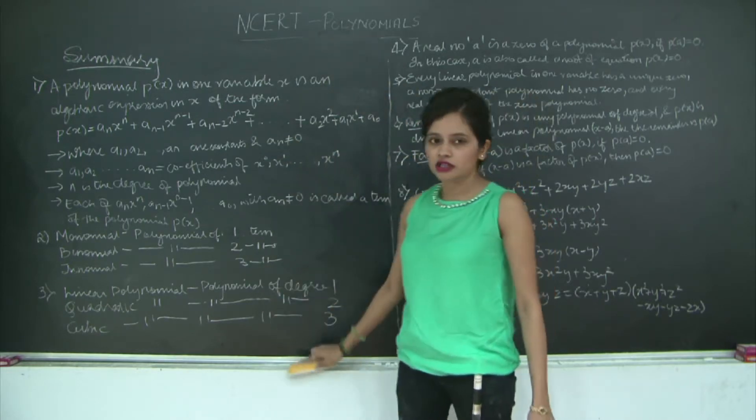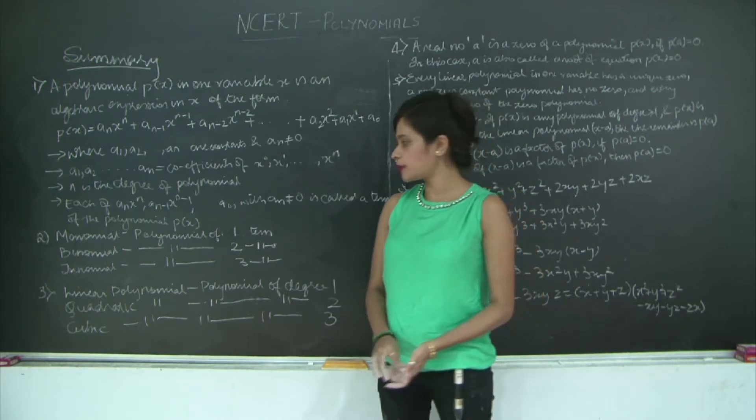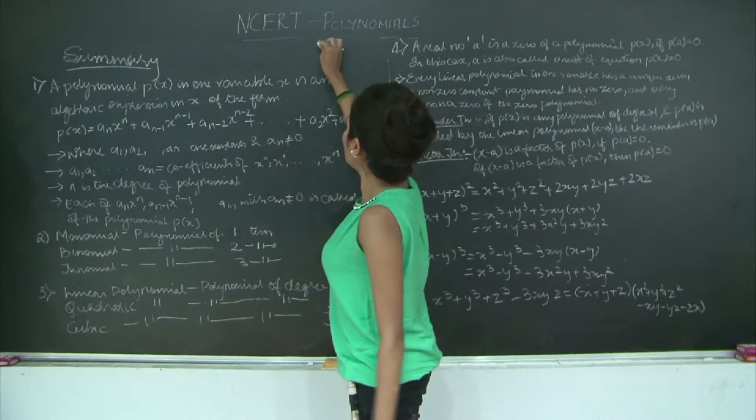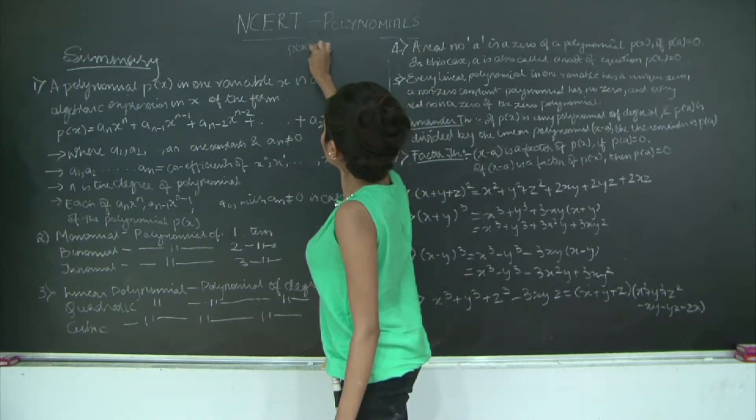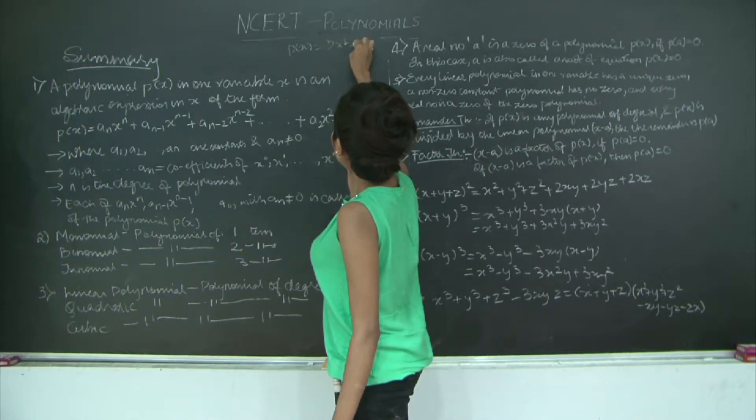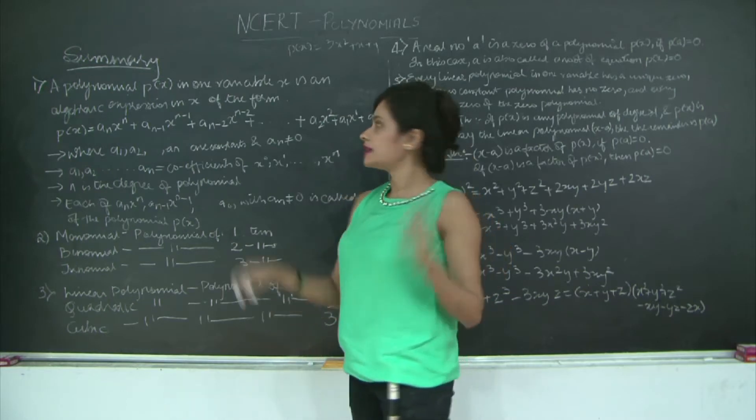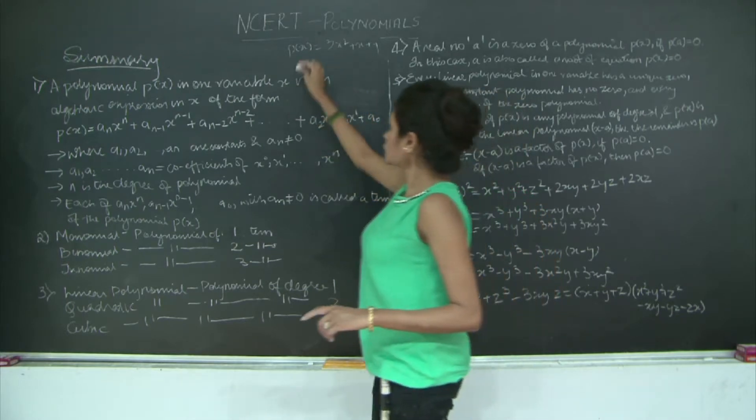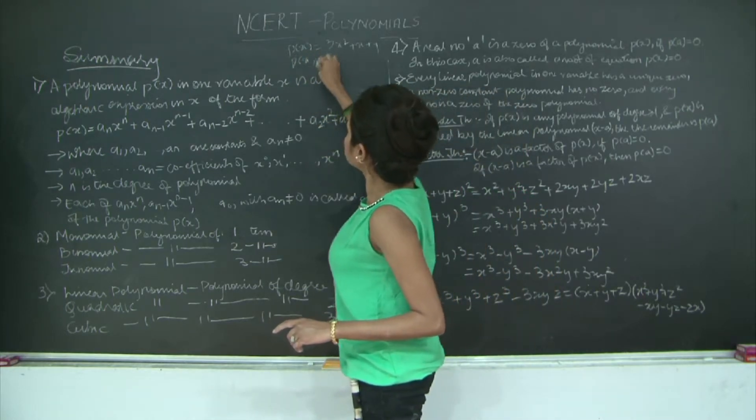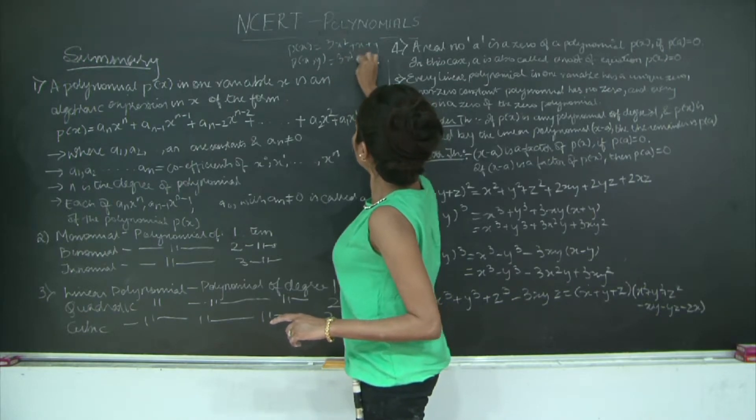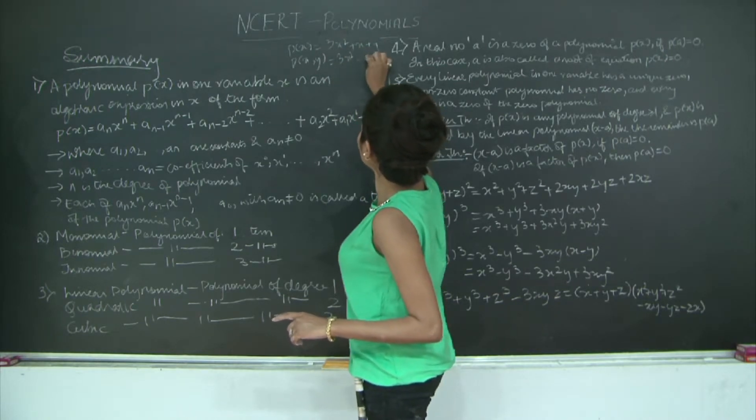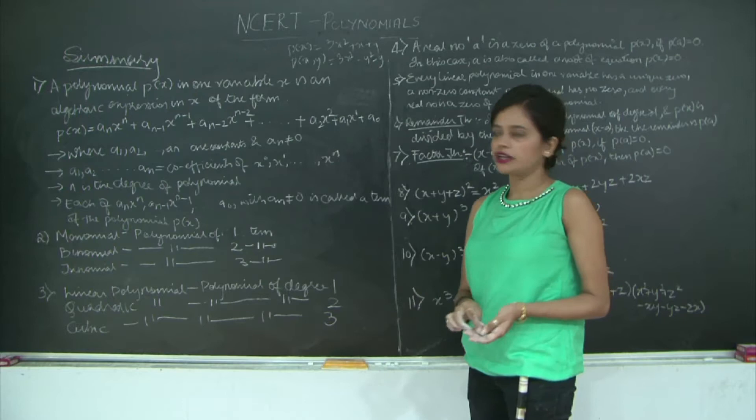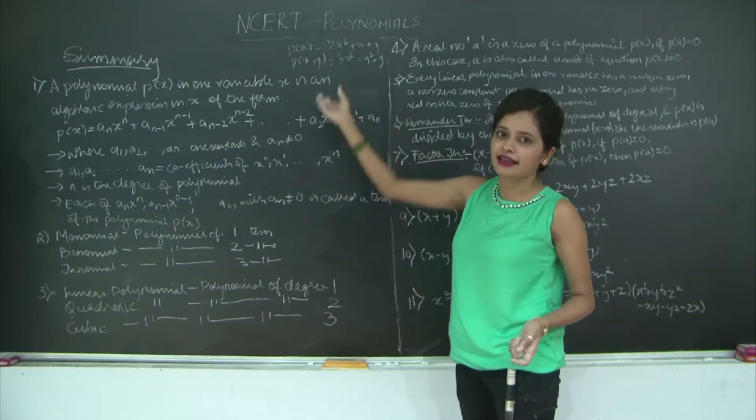Similarly, if you have two terms in your expression, in a polynomial expression, it is called a binomial. Similarly, three terms is a trinomial. Let me give you an example of trinomial: P(x) = 3x² + x + 1. This is a trinomial in the variable x. If I have something like P(xy), I can write 3x² - y² - y. Again, I have three terms, so therefore it is a trinomial with three terms, and this is a polynomial in two variables x and y.